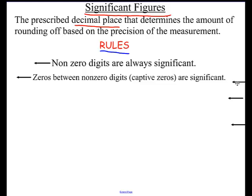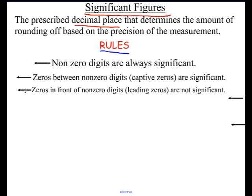Now we get to the ones that cause a little confusion. Zeros in front of non-zero digits — we call them leading zeros — are not significant. For example, the number 0.0251: those first two zeros are leading zeros. Students often think there's a rule that zeros after a decimal place always count, but the easiest way is to start counting from the left and not count a significant figure until you run into a non-zero digit. So skip the first zero, skip the second zero, then count 1, 2, 3 — that number has three significant figures.